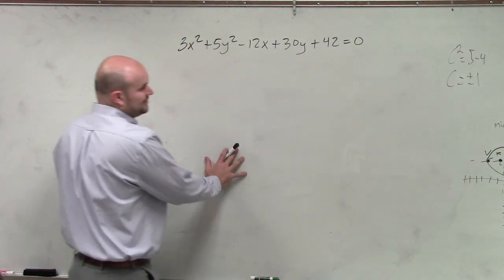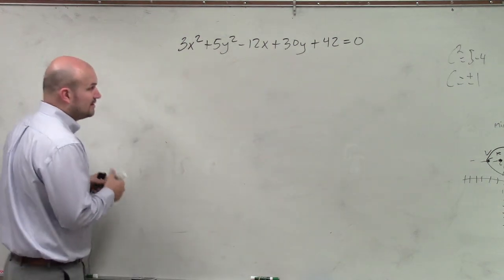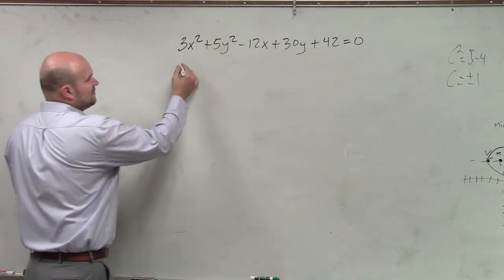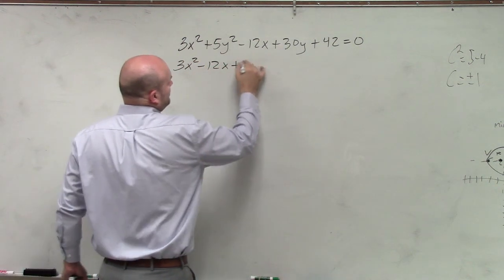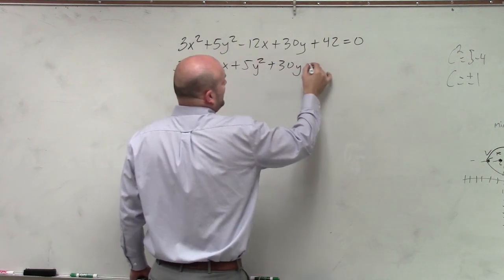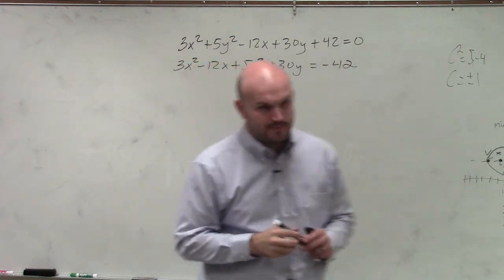So what we need to do, the main important thing is we have those binomials squared. So we want to complete the square. To complete the square, we have to get our variables next to each other. So I have 3x² - 12x + 5y² + 30y, and I'm going to put the 42 to the other side, so I'm going to negate it on both sides.